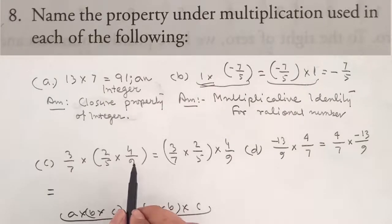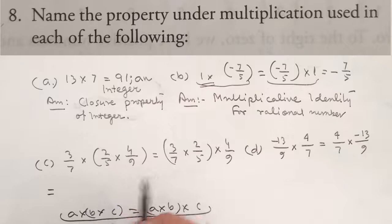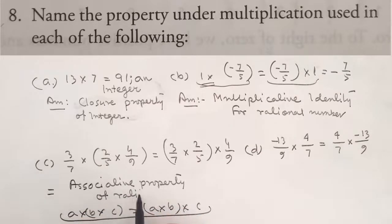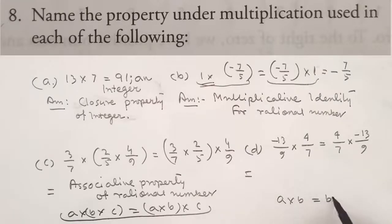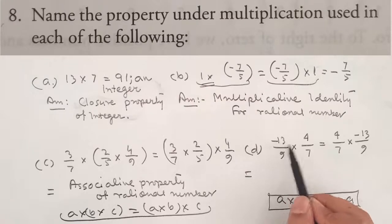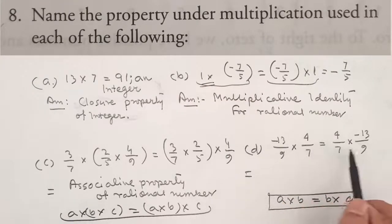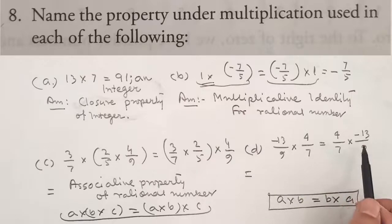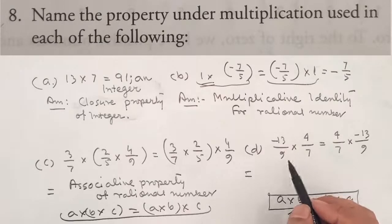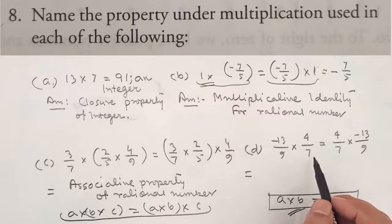This is the value of multiplicative identity. When we look at the form a into b equal to b into a — for example, minus 13 by 9 multiplied by 4 by 7 — this is a rational number. Considering this as a and this as b, we can see this is the commutative property of rational numbers.